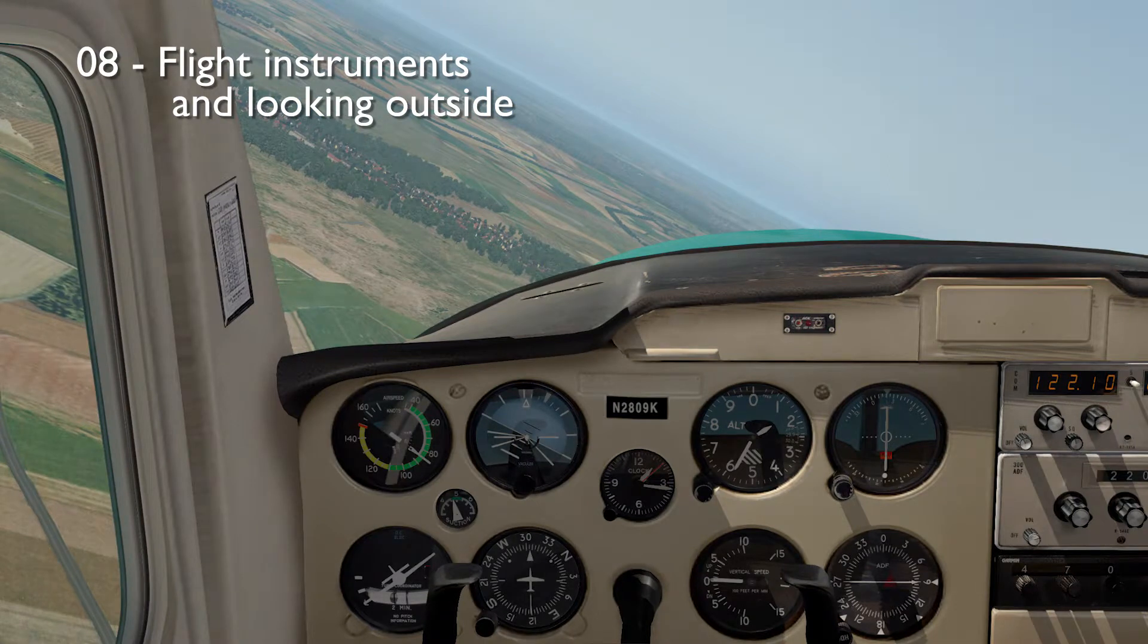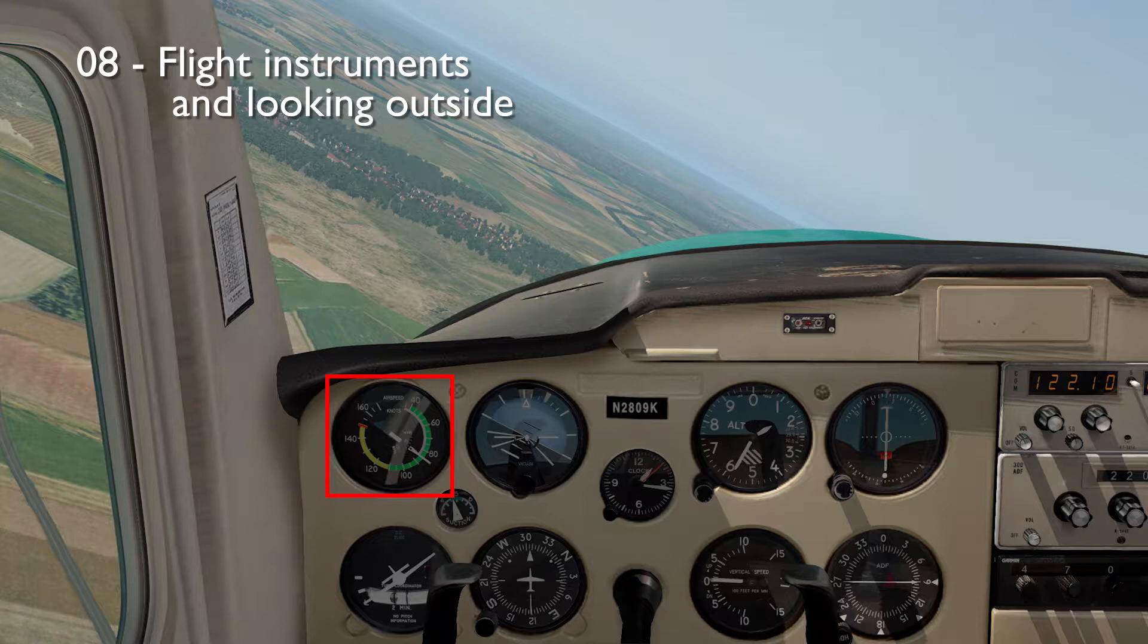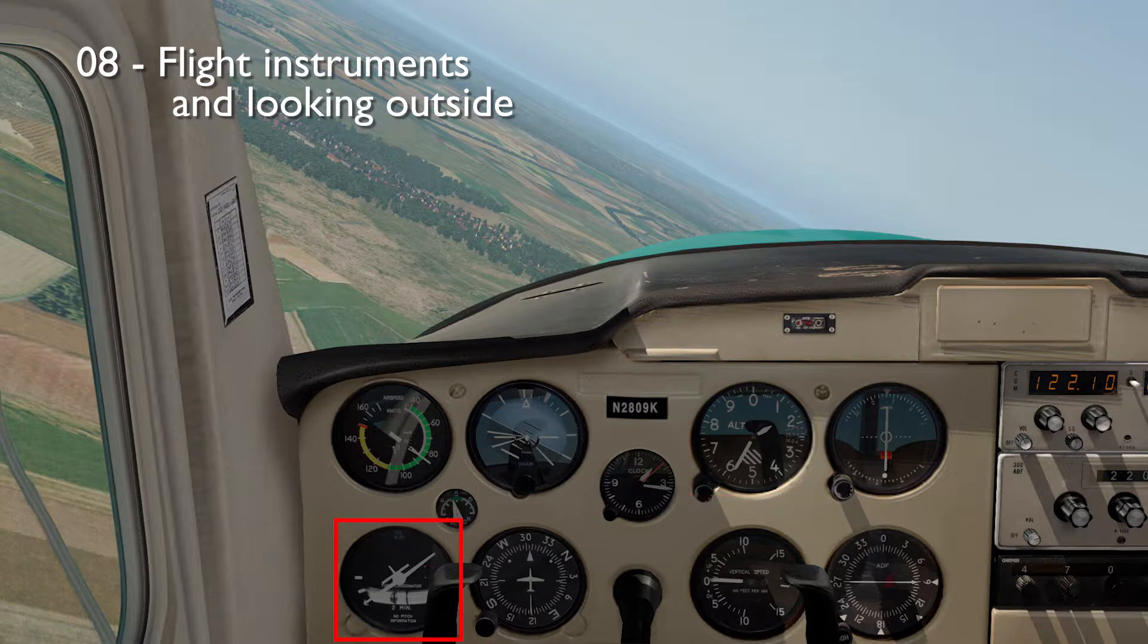Now this is a simulator picture, and this is called the six pack of basic flying instruments: the airspeed in knots, the attitude indicator showing if you're pitching up or down or rolling left or right, the altimeter showing your altitude, the turn coordinator, the direction indicator or heading indicator, and the vertical speed indicator showing how fast you are climbing or descending.